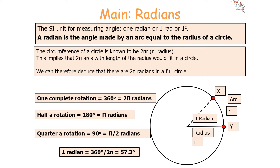Half a rotation, which is 180 degrees, is π radians. A quarter of a rotation, which is 90 degrees, is π over 2 radians. Therefore, 1 radian is 360 degrees over 2π, which gives us 1 radian equals 57.3 degrees.